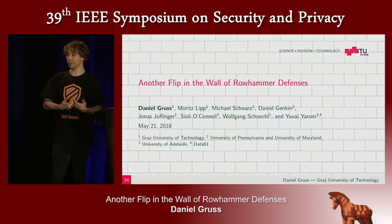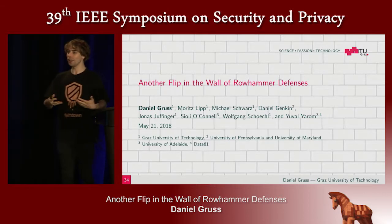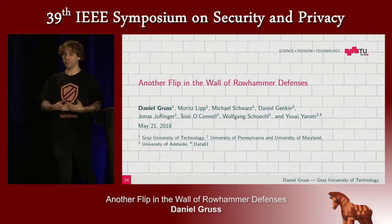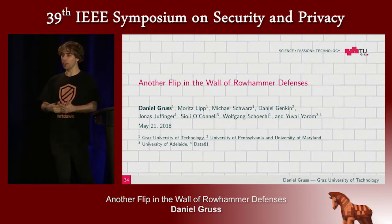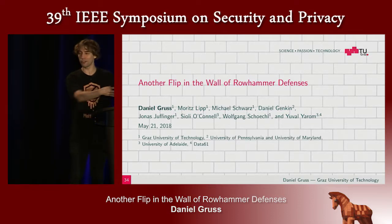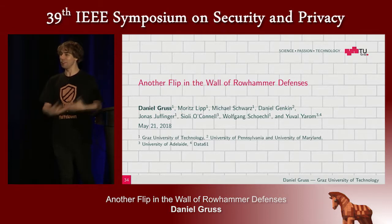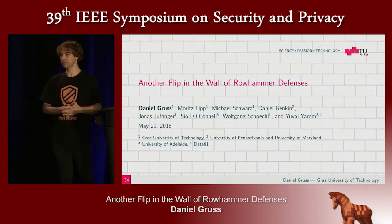The key point we try to make here is that if you build SGX in a very clever way so that you cannot spy on benign applications, you also won't be able to spy on our Rowhammer enclave. So SGX then also protects our malware.